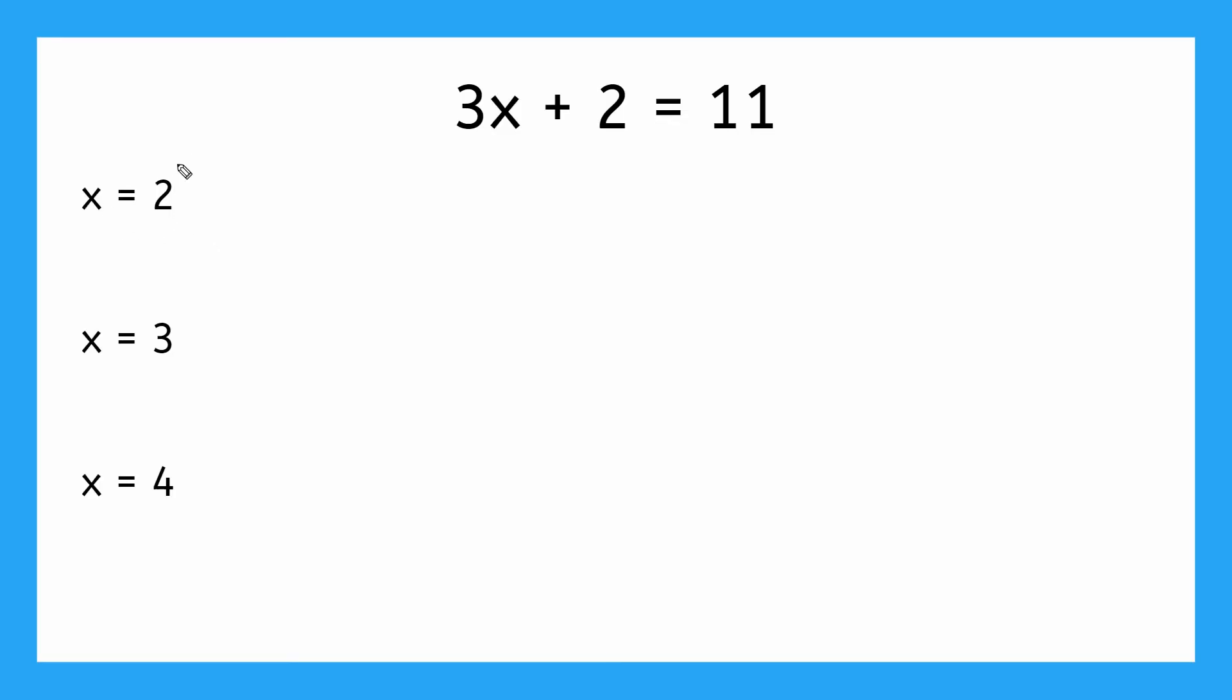And if we're going to use substitution, that means we're going to plug it in where we see this x. So we will have 3 times 2 plus 2 equals 11. Order of operations, I'm going to multiply 3 times 2, that gives me 6 plus 2 equals 11. But if I do this out, 6 plus 2, that gives me 8 equals 11.